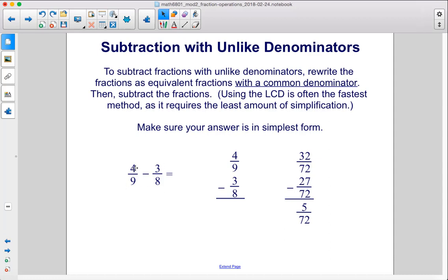Alright, so here we have 4 ninths minus 3 eighths. We just find the common denominator by multiplying 9 times 8, we get 72. Then we figure out the numerators, and we subtract 27 from 32, and we get 5 over 72.